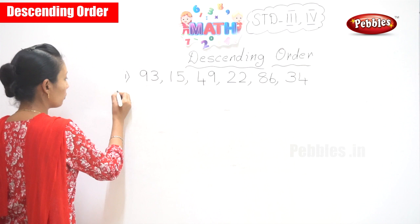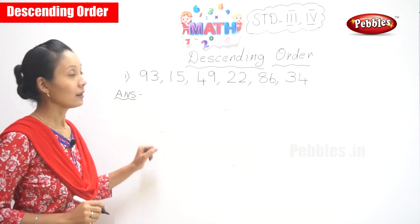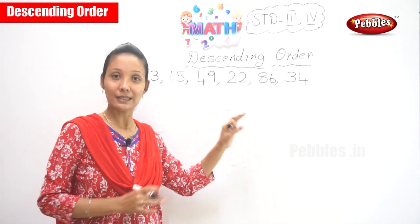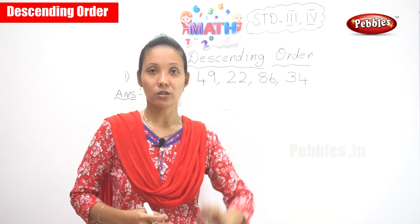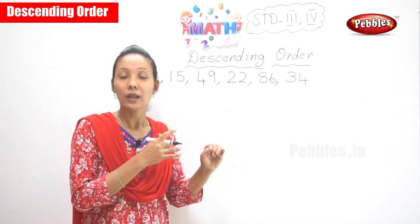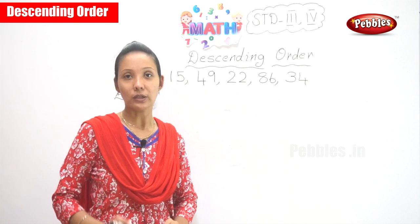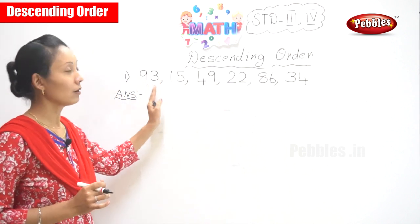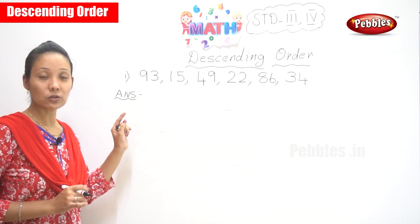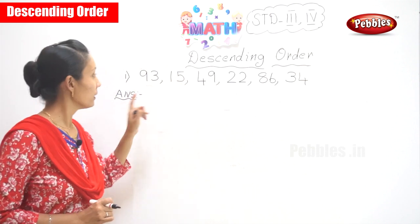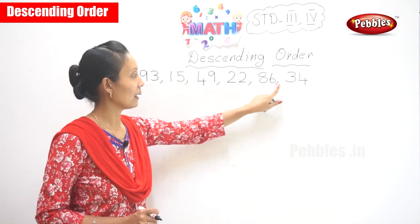So now you have to write from greater to smaller. Descending means — the meaningful way to think about descending is something coming down from a greater height. So you need to keep that in mind: descending is from your greater to your smaller. Which is your greater number, children? Which is the biggest number? So you need to see the first digit — which is the biggest number we're starting with.